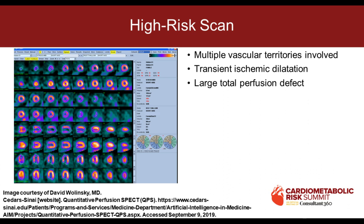What is a high-risk scan? We have three views: short axis, vertical axis, and horizontal long axis. We have stress and rest images and compare relative perfusion from one segment to another. Here's an abnormal scan showing a large defect at the apex, septum, anterior wall, and inferior wall — consistent with multivessel coronary disease. Also look at the cavity size: because of subendocardial ischemia with decreased tracer uptake, you see a bigger cavity, which is a high-risk marker associated with increased coronary risk.